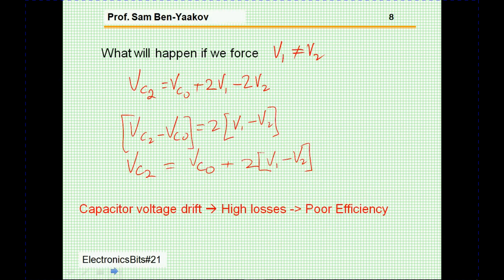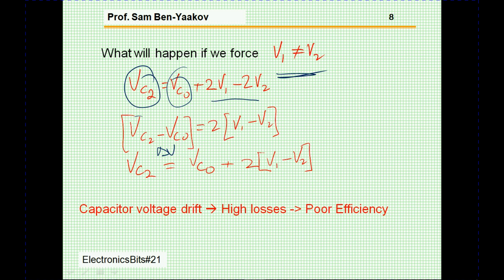What will happen if I force V1 and V2 to be different — that is, place two voltage sources at the two ends instead of a load? Then Vc sub two minus Vc sub zero, the delta V, equals 2 times V1 minus V2. So each time this process repeats, the capacitor voltage increases by this delta — obviously a runaway situation where current builds up. Either the circuit stabilizes at a point with high losses, or it goes into saturation. Either way, the circuit will not operate properly.